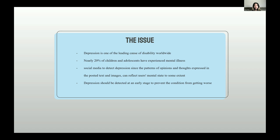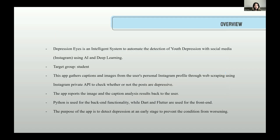Because of the close interaction that exists between social media platforms and its users, these platforms have come to mirror the user's personal life on a number of levels. This is an intelligent system to automate the detection of user depression within social media using AI and machine learning. Students are the targeted group because most students with depression express themselves on social media rather than seeking help from doctors.